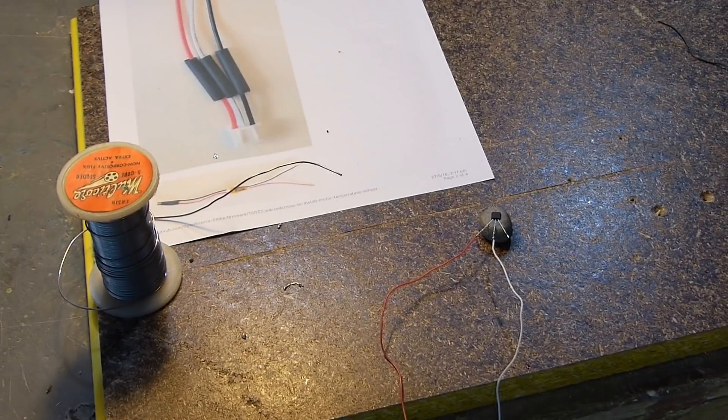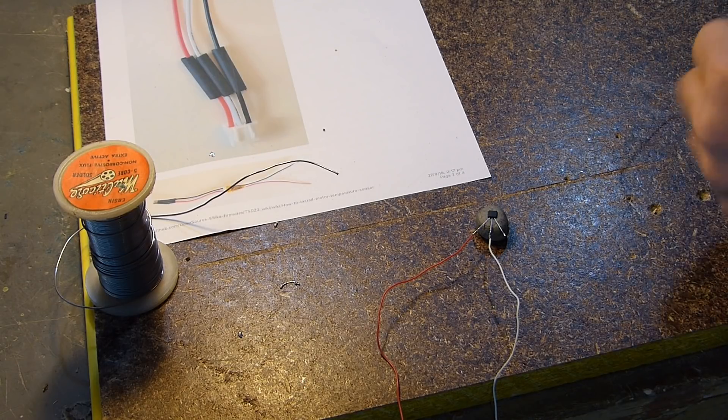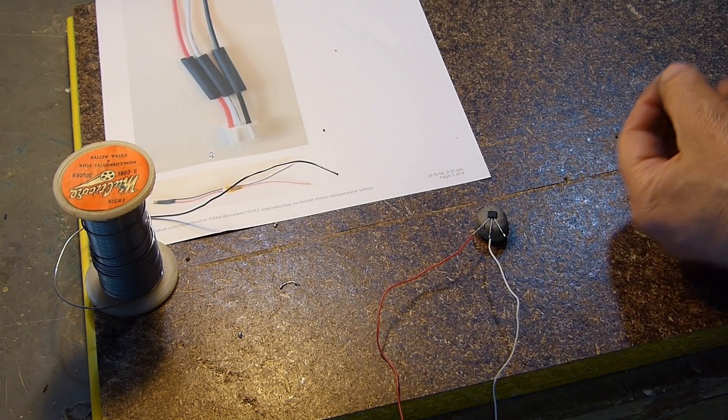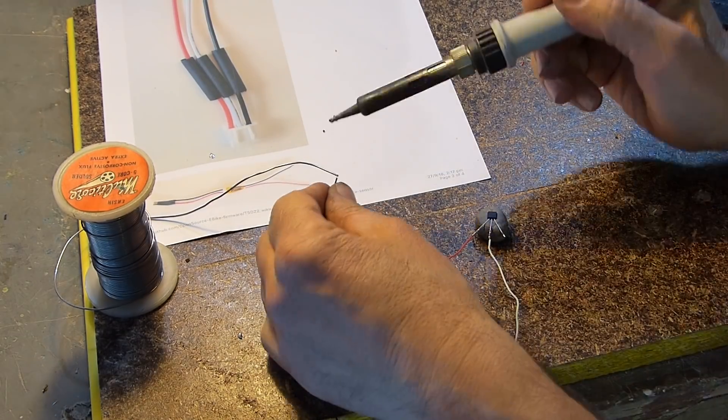Okay, so I'm just soldering up the sensor onto the red, white and black wires as per Casino's diagram.